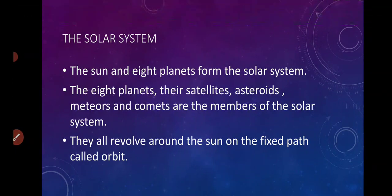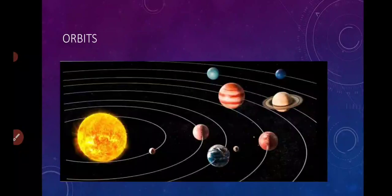Let's revise again. The sun and the planets form the solar system. The eight planets, their satellites, asteroids, meteors, and comets are all members of the solar system — just as Moon is Earth's natural satellite. And these all things revolve around the sun. The fixed path on which they revolve is called orbit — उसे हम orbit कहते हैं.